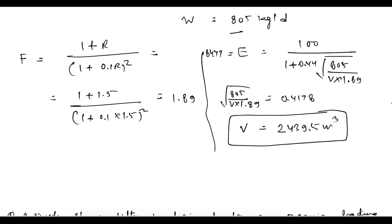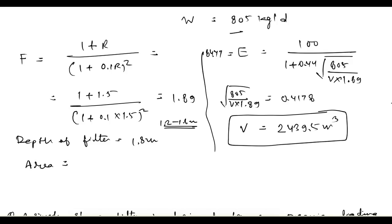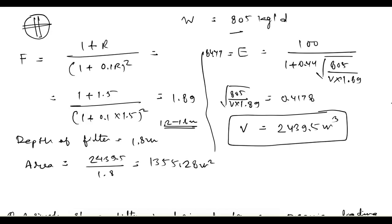Since depth is not given, we assume depth of filter. For a high rate filter the range is 1.2 to 1.8 meters; let's take 1.8 m. Area = 2439.5 / 1.8 = 1355.28 m². For a circular filter, using π/4 × d² = 1355.28, the diameter works out to 41.5 meters.